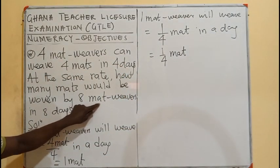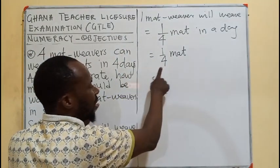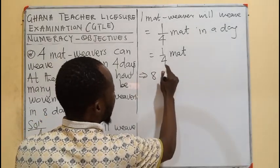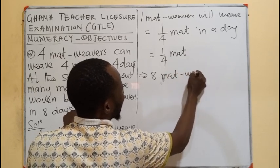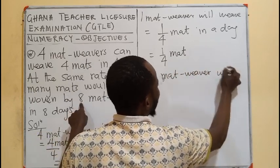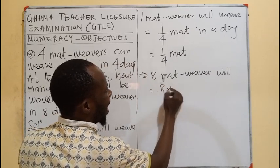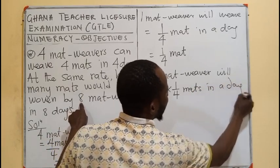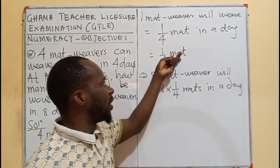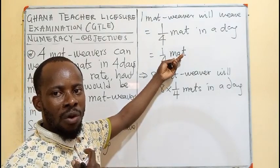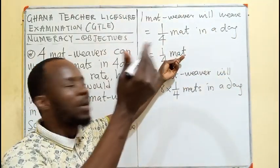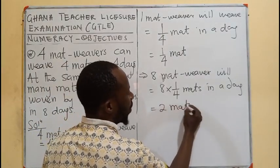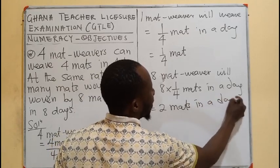So, now, eight men. If one man is weaving this, how about eight men? This implies that eight mat weavers will be weaving eight times one out of four mats in a day. Because in a day, one person is weaving this. So, now, if we are eight, I weave one quarter, one quarter, one quarter, eight of them. All will be happening in one day. So, it means this is going to be two. So, we are weaving two mats in a day, all of us.